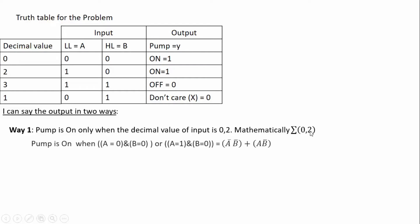So pump is on when A equals 0 and B equals 0, or when A equals 1 and B equals 0. Expressing this mathematically: A equals 0 means A-bar, and B equals 0 means B-bar, giving the term A-bar·B-bar; OR A equals 1 means A, and B equals 0 means B-bar, giving the term A·B-bar. This gives the pump-on expression as A-bar·B-bar + A·B-bar — this is the sum of products expression.